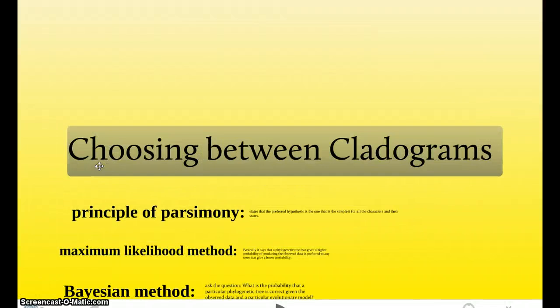Okay, last part of my section is how to choose between cladograms. So basically this is a real-life thing. Scientists or researchers, they have a bunch of cladograms of the same species and proposing the evolutionary relationships of that same group of species. But there's many cladograms. So they need to figure out which one is the best and which one they can publish to the scientific world. So they do this by following these three steps.